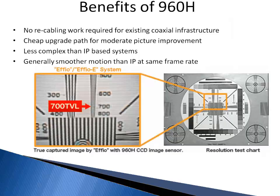There are some notable benefits to the 960H. There is no recabling work required for the existing coaxial infrastructure. The upgrade paths for moderate picture improvements are cheap. The 960H is less complex than IP-based systems, and also offers generally smoother motion than IP at the same frame rate.